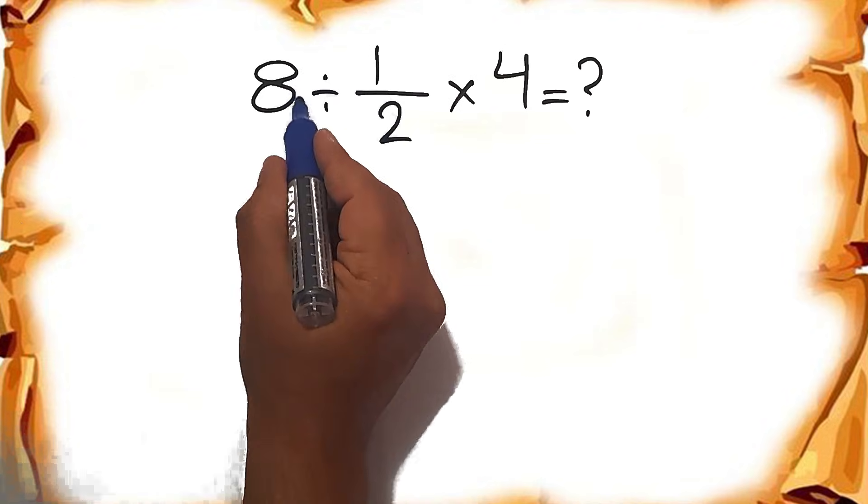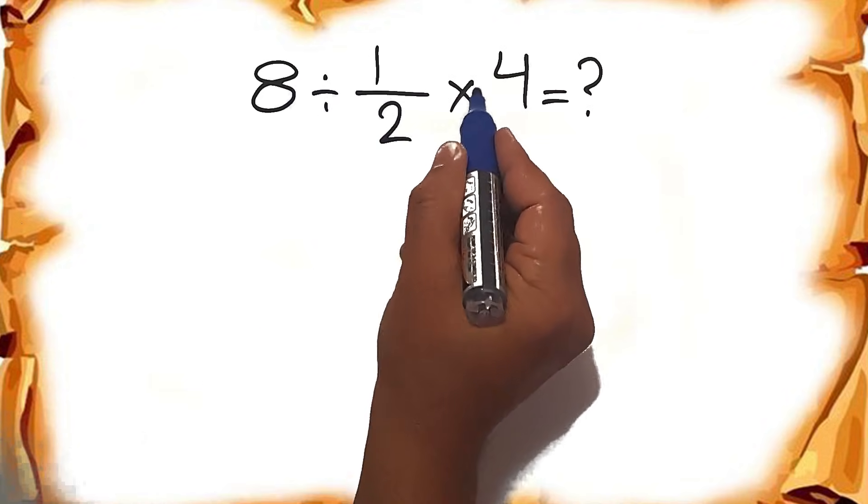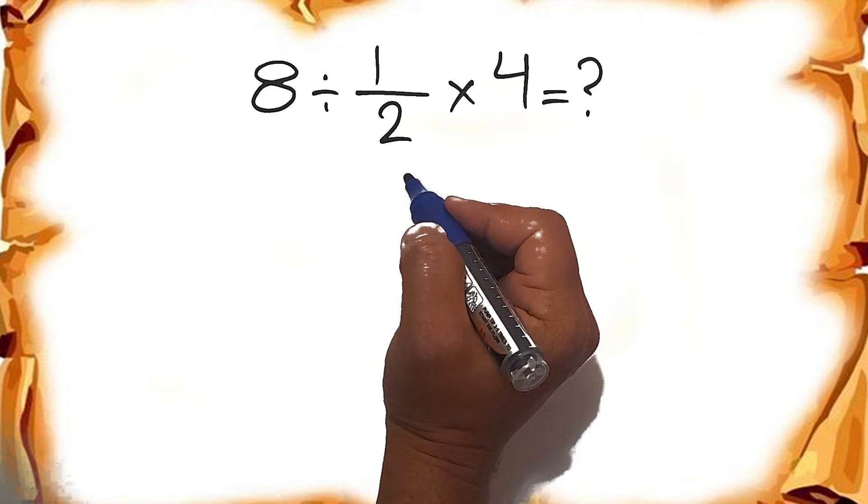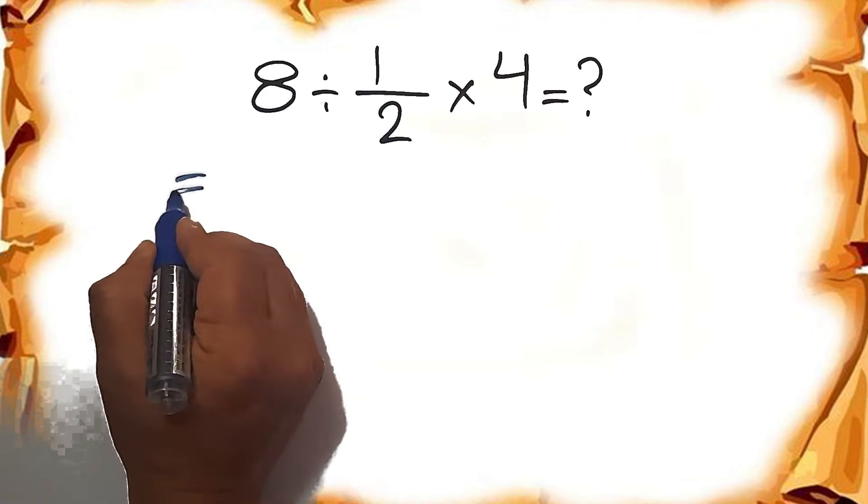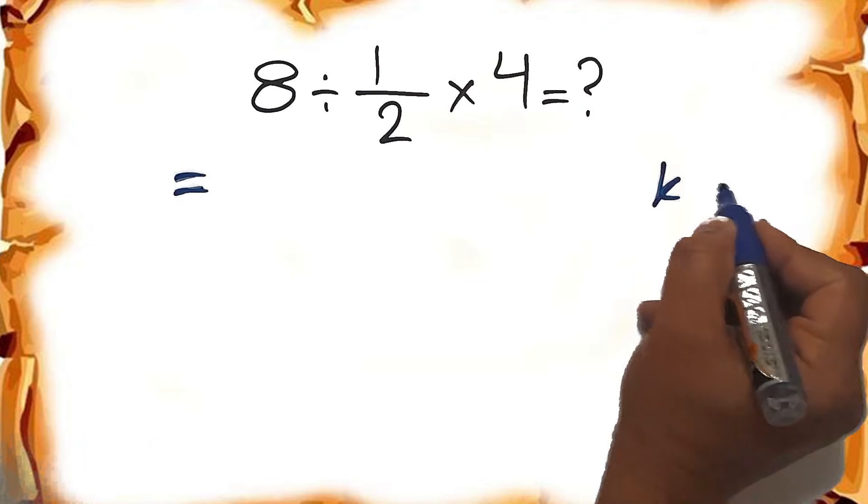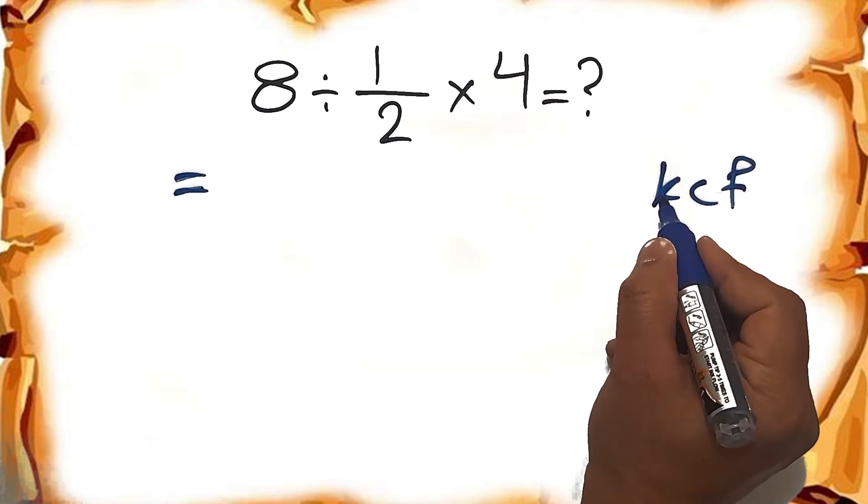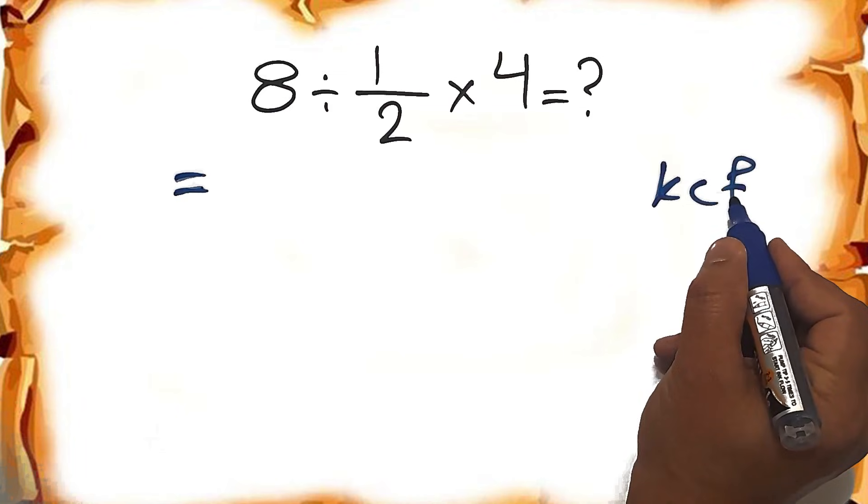So first this division and then this multiplication. 8 divided by 1 over 2. Here according to the KCF rule, K stands for keep, C stands for change, and F stands for flip.